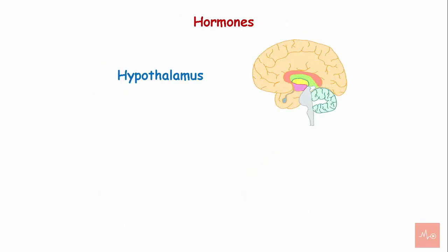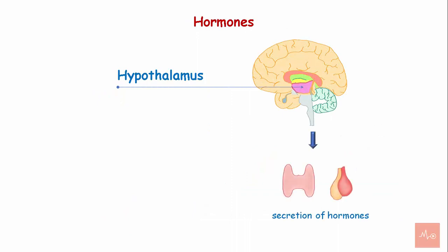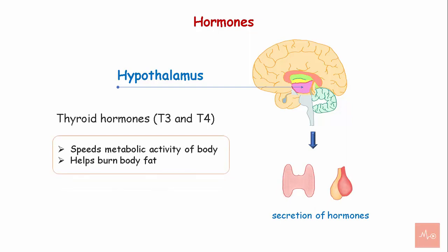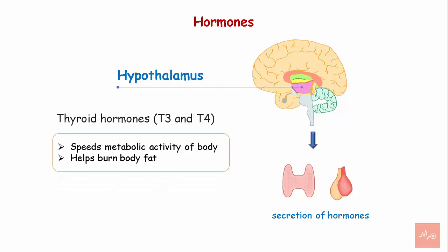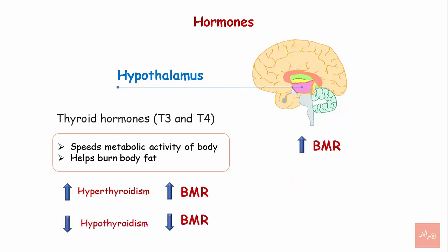Hormones. The hypothalamus, located in the forebrain, stimulates the thyroid and pituitary gland to secrete hormones. Thyroid hormones, mainly T3 and T4, speed the metabolic activity of the body and help burn body fat. Conditions like hyperthyroidism with increased thyroid hormone levels are associated with increased BMR, while hypothyroidism can be associated with lower BMR. Other hormones that increase BMR are epinephrine, cortisol, growth hormone, and sex hormones.